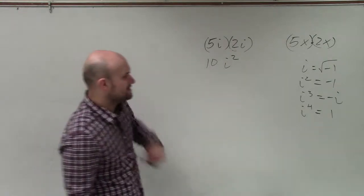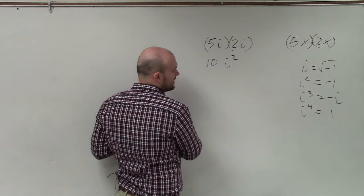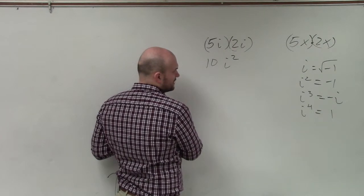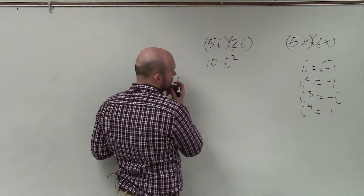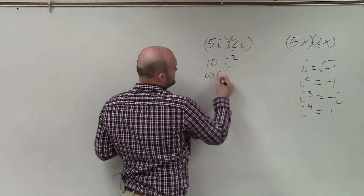So therefore, i squared is simply just negative 1 times negative 1. So therefore, our result is going to be 10 times negative 1, which equals negative 10.